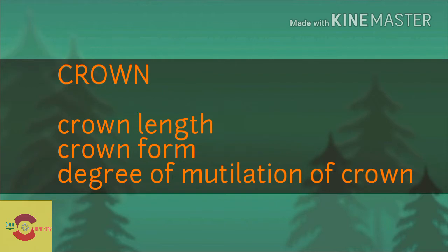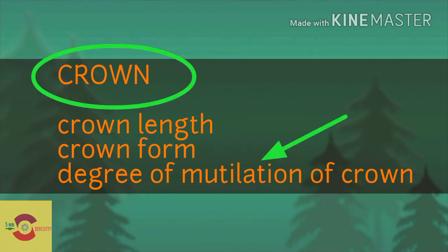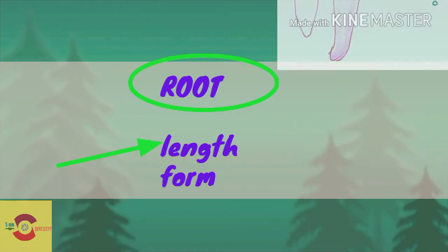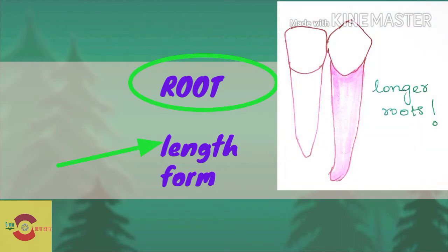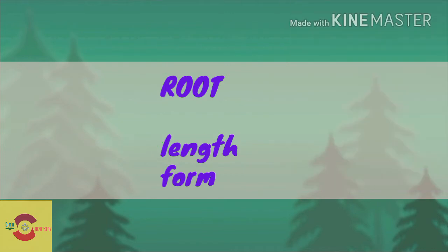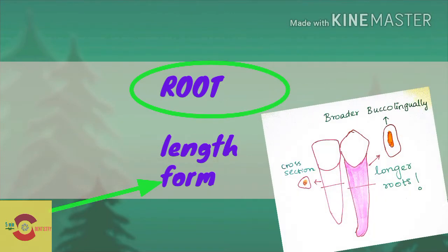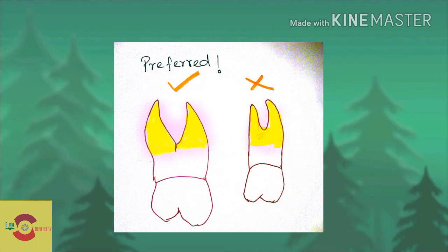If mutilation and fracture of the crown are severe, removal of the tooth is necessary. Regarding the root, adequate root anchorage is necessary to transmit occlusal load. The length of the abutment root is directly proportional to the stability and strength of the prosthesis. Roots with parallel sides that are broad labiolingually are preferred, and multi-rooted teeth are a better choice.